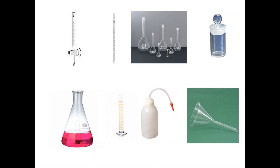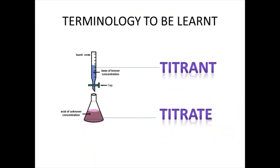In a laboratory, we are concerned with different glass apparatus. From right to left on the top row: weighing bottle, volumetric flask, pipette, burette. On the bottom row from left to right: conical flask, measuring cylinder, wash bottle, funnel. These are the simple glassware which we use in our laboratory.